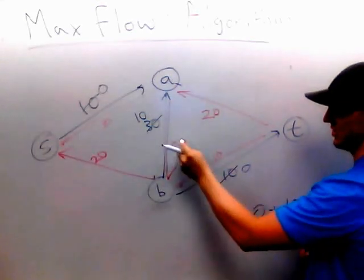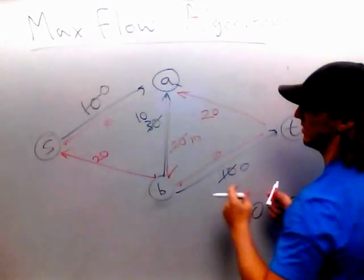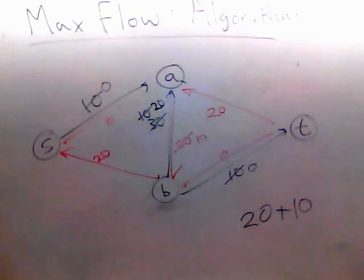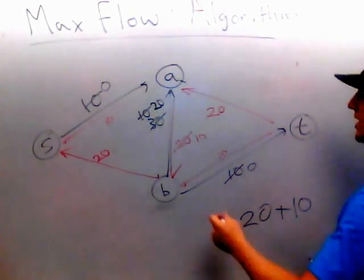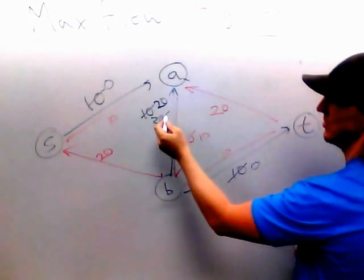So A to B loses 10. 10 of them are used up, so subtract 10 from that value. And on the back edge, I add 10, okay? So if that didn't make sense, rewind it, watch it again, and think about it, okay? I took 10 from A to B to subtract that weight from that edge, and add it to the back edge, okay?